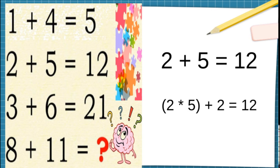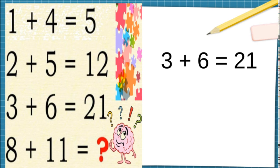Okay. Let's take our third equation. 3 plus 6 is equal to 21. How do we solve that equation? (3 × 6) + 3.